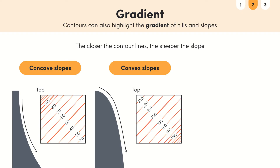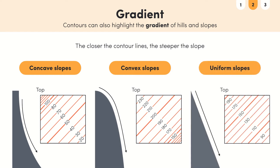A convex slope is more like a dome or the outside of a circle so the slope increases from high to low altitude. Shown on a map, the contour lines become less spread out as you move down the hill. Finally, a uniform slope has a constant gradient and so the contour lines are at regular intervals.